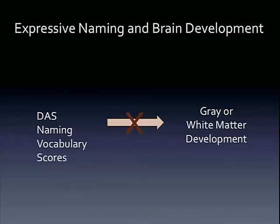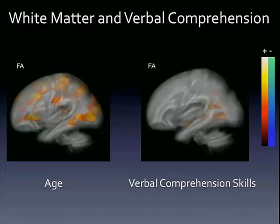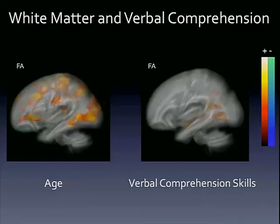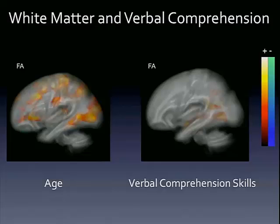We did see one interesting relationship when looking at verbal comprehension and brain development. This is what's happening across age with white matter development — increased white matter organization in the left hemisphere. When you look at the relationship between verbal comprehension and white matter, we're seeing a positive relationship between white matter tracks from the left mesial temporal lobe, crossing the posterior corpus callosum, most prominently in the forceps major. This might support a relationship between semantic knowledge and medial temporal regions. Temporal lobectomy patients often show deficits in semantic fluency, which supports this relationship.